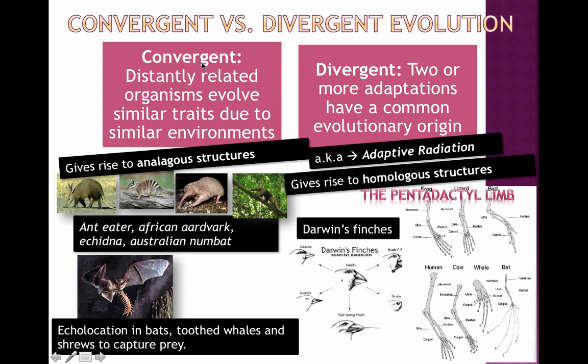Convergent means coming together — from two distant points we're reaching a very similar point. The idea here is that you get something called analogous structures: things that have a very different evolutionary origin but end up with very similar traits because of similar environmental pressures. We call those traits analogous.